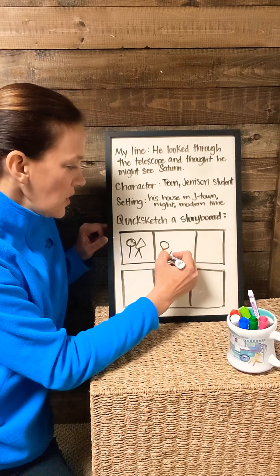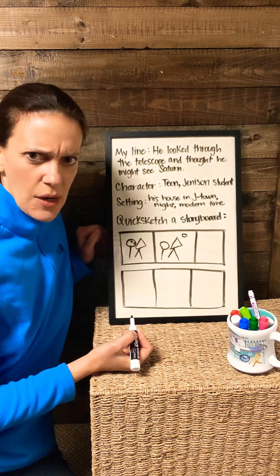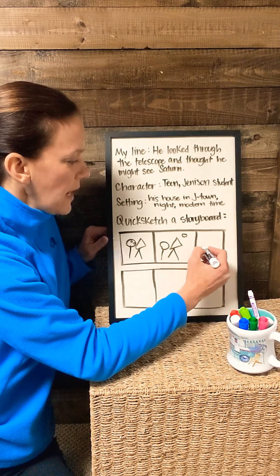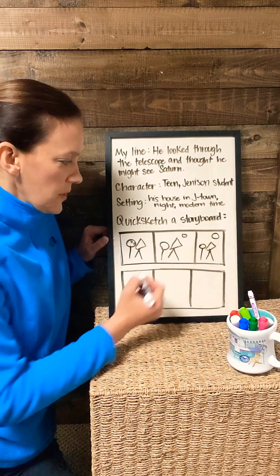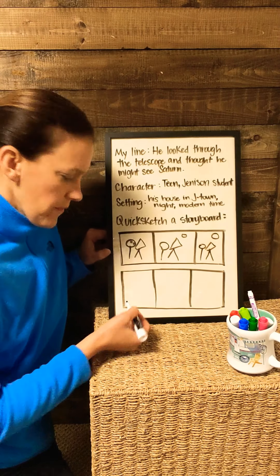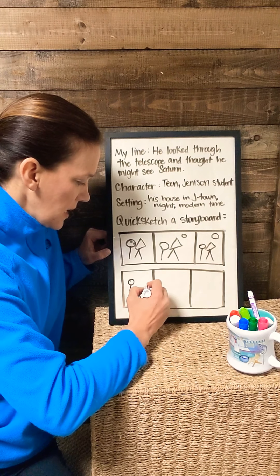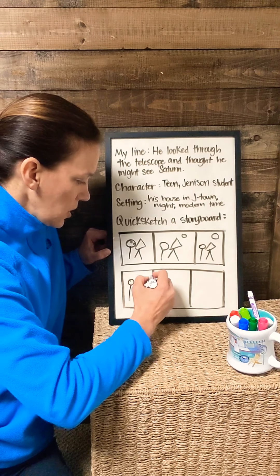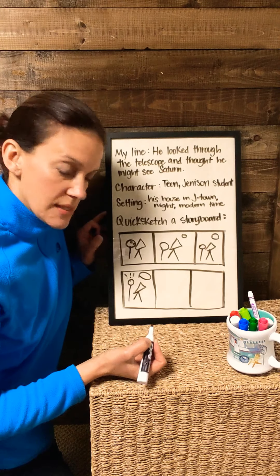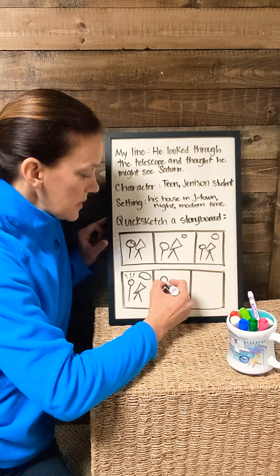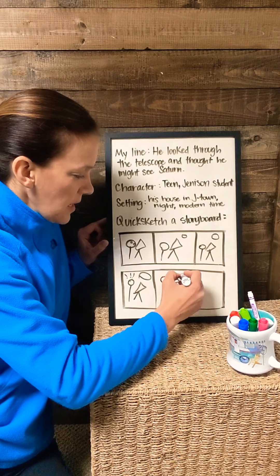So let me show you mine. The line that I decided I want to use is: he looked through a telescope and thought he might see Saturn. I've been on kind of a space kick lately. So if I think about who my character would be, I think I just want to work with a teenager in Jenison — somebody that I would kind of already know as a character. It just kind of makes sense for my brain. And the setting, I'm just going to have him at his house looking through a telescope during modern time.